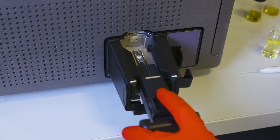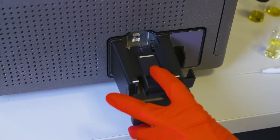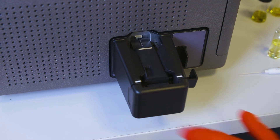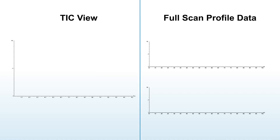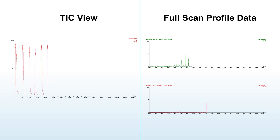Users can easily acquire full scan mass spectral data that can be used to differentiate between sample types and detect changes in the samples such as adulteration.